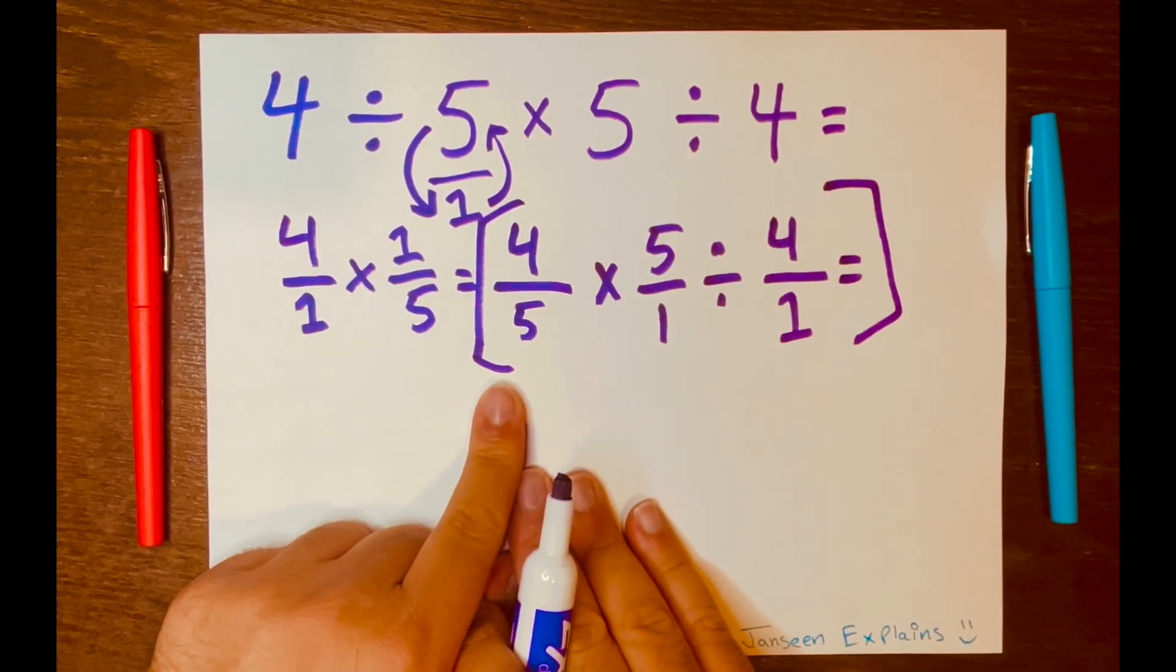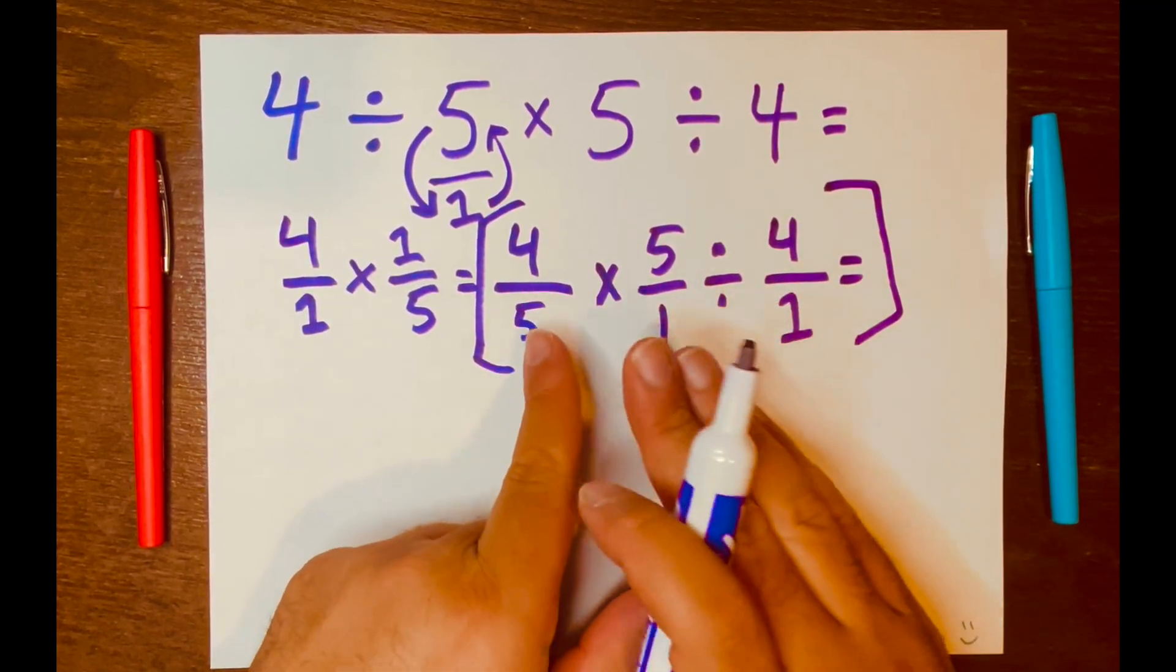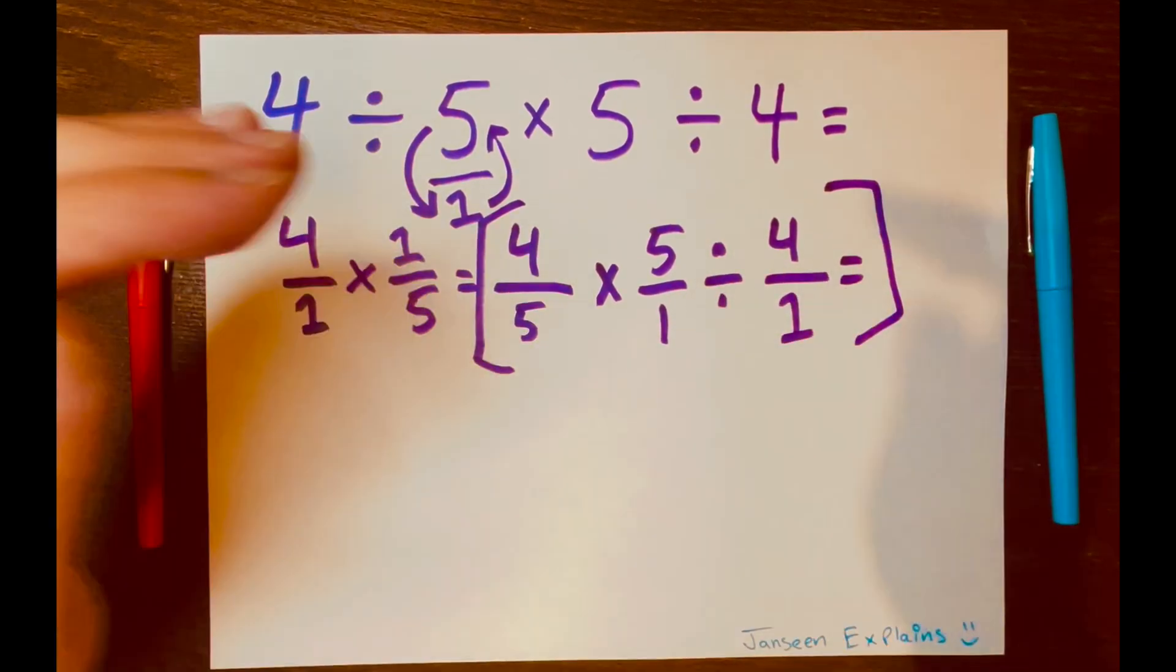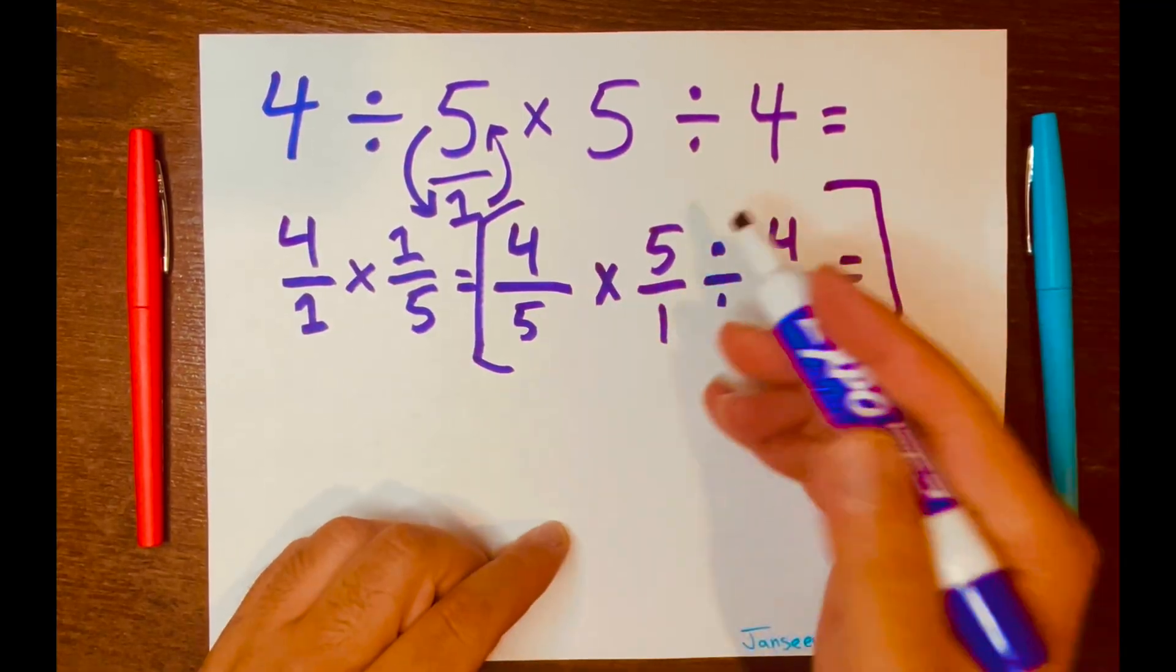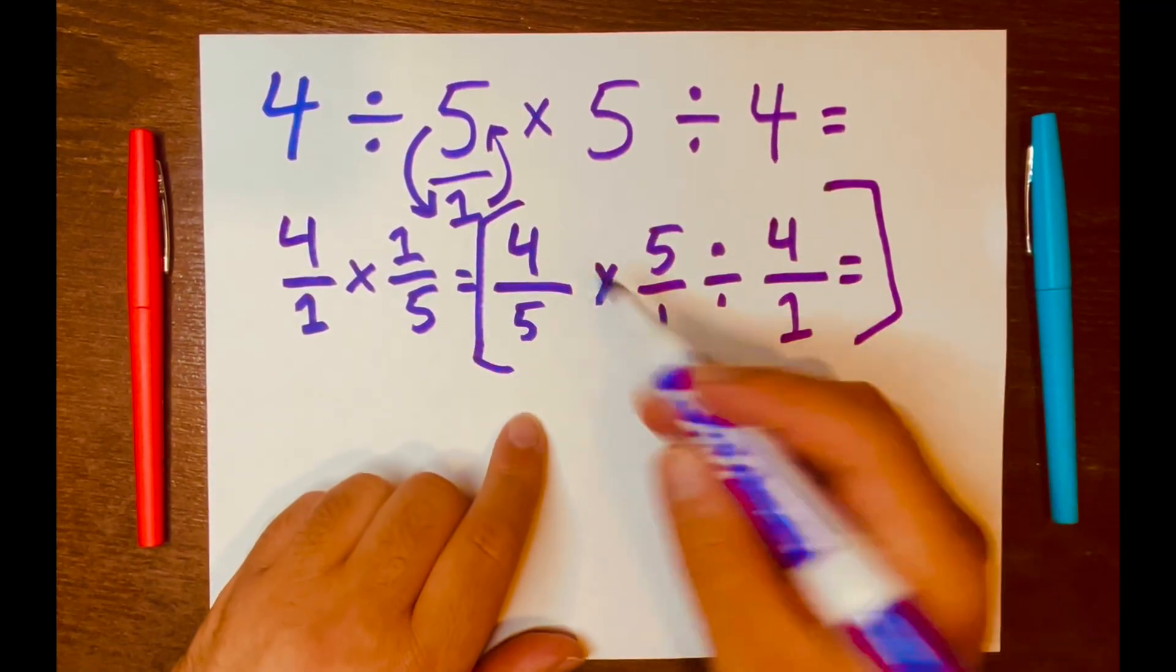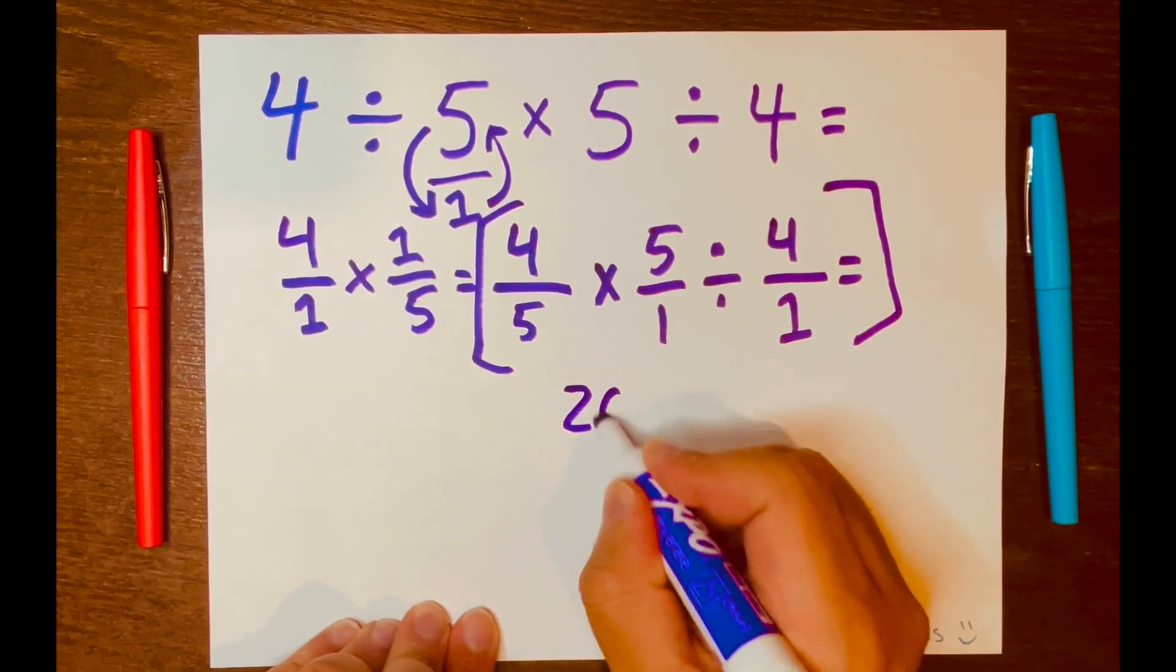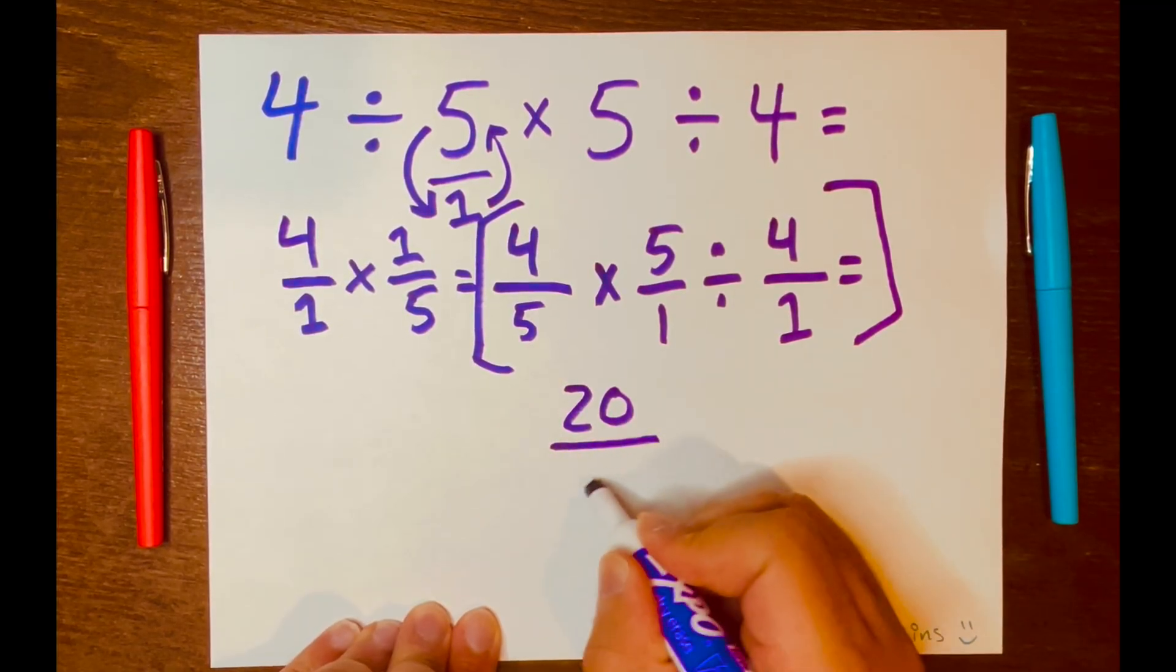So which one goes first? We read from left to right. And we know multiplication and division are both within its own level. So we just read from left to right. So we start with multiplication. So here we just multiply across. 4 times 5 is 20, 5 times 1 is 5. So it's 20 over 5.